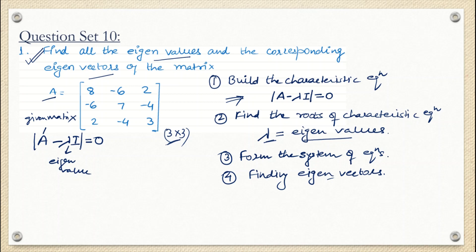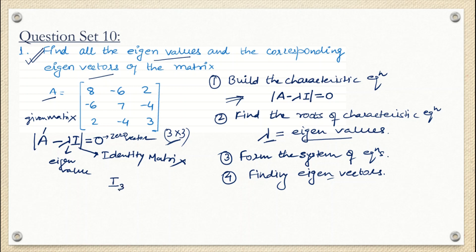I is the identity matrix. Since the given matrix A is a 3×3 square matrix, I here is I₃ — the identity matrix of order 3. The identity matrix has 1 on its diagonal and 0 in all other places. I₃ has three rows and three columns.